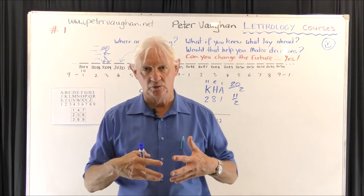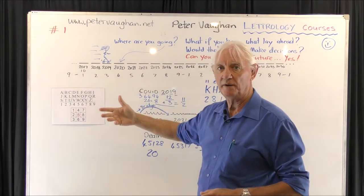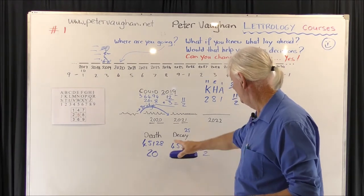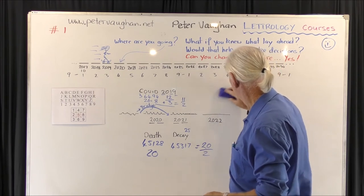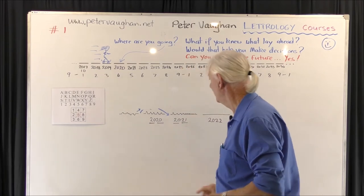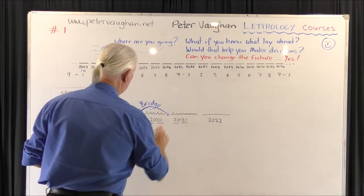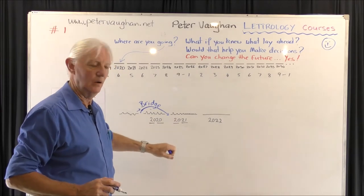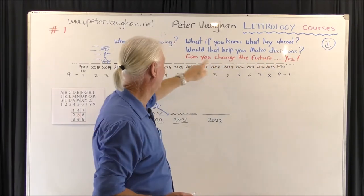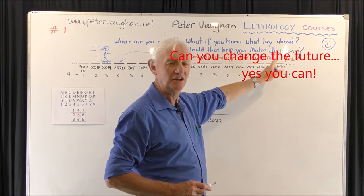Here's the gist of all of this: you're going through life and this is an absolute crap year ahead. I had the word bridge there — can you get over it? Can you escape this? Yes, you can. How? By knowing what's ahead. What if you knew what lay ahead — would that help you to make decisions? Probably. Can you change the future? Yes, you can.